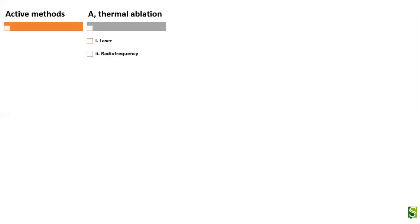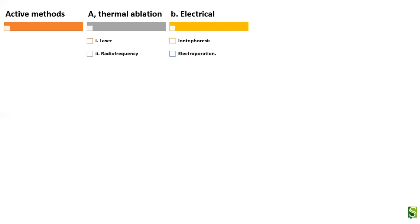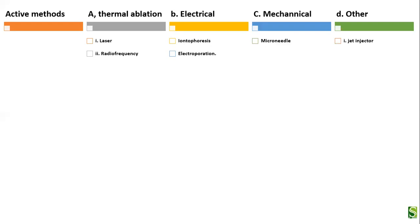Based on the method, permeation enhancers use either an active or a passive method. The active methods are of the following types: the first is thermal ablation, which uses either laser or radio frequency technique. The next method is electrical, where iontophoresis or electroporation is used. The next method is mechanical, where microneedles are used. Other methods include jet injectors and ultrasound.